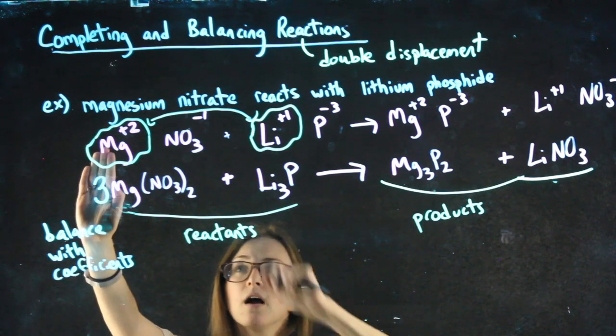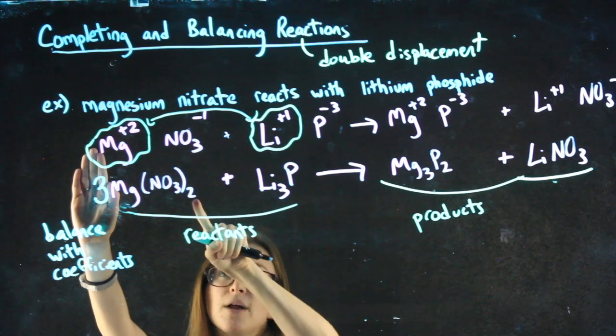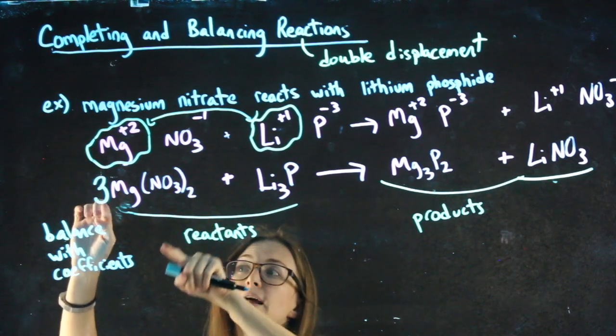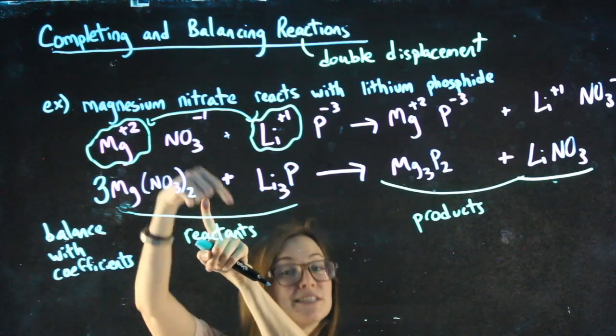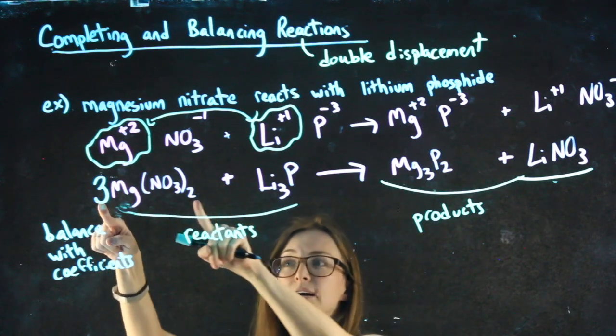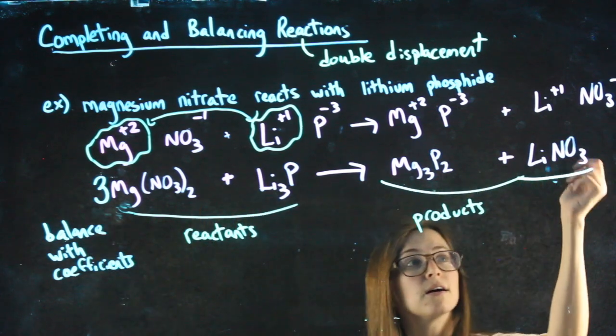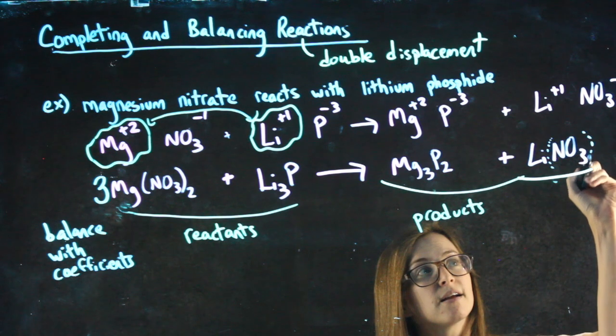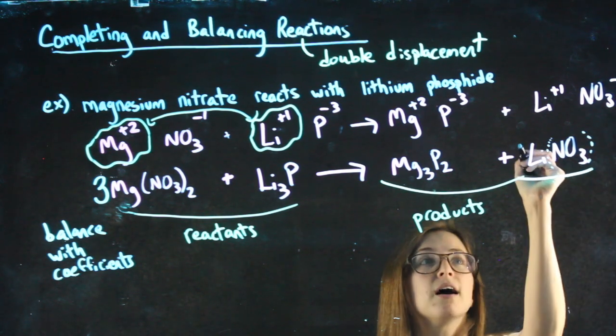If that three weren't there, of this nitrate group in parentheses, I would have two. I'd have two of that whole group. Now I have three of the two that three distributes. So really what I have here are six nitrates because of that three and that two. I have six nitrates here. Here, there aren't parentheses, but if they help you to think about it, I only have one nitrate. So what do I need in front? A six.